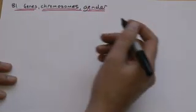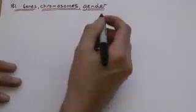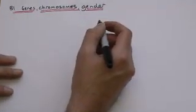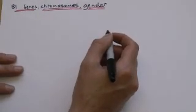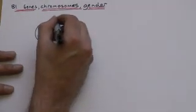So this is from B1, about genes and chromosomes and gender or determination of sex in other words. A little bit on genes and chromosomes first of all, something people do tend to get a little bit confused with.